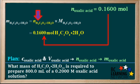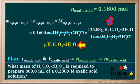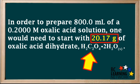So we substitute 0.16 moles in for n oxalic acid dihydrate, and multiply by the molar mass of oxalic acid dihydrate, which is 126.08 grams per mole. If you wish, pause the video and convince yourself that 126.08 is the correct molar mass of this compound. We can cancel out the unit moles of oxalic acid dihydrate, and we're left with grams. So grams of oxalic acid dihydrate is the unit for our answer. To calculate the answer, we go 0.16 times 126.08, and we get 20.17 grams of oxalic acid dihydrate.